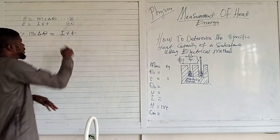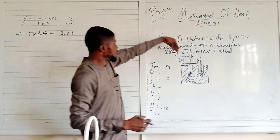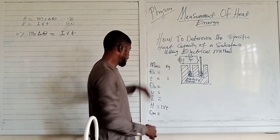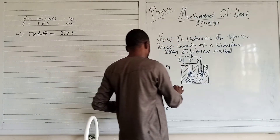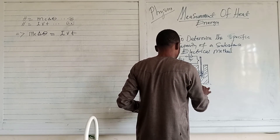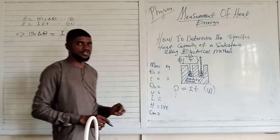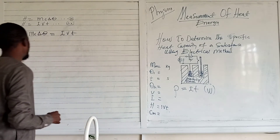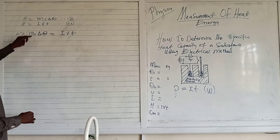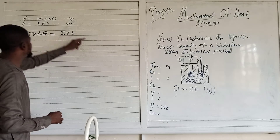You also need to know that IV is the power generated in the circuit. The power generated in a circuit P is given as IV, in the unit of watts. So we are free to say that MCΔθ = IVT.